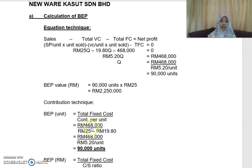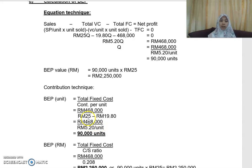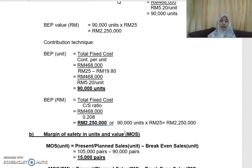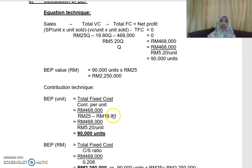Total fixed cost RM468,000 divided by contribution per unit (RM25 minus RM19.80) equals RM5.20, giving the same answer of 90,000 units. To express in value (RM), divide by the C/S ratio of 0.208, which gives RM2.25 million — the same answer. Both the equation technique and contribution technique arrive at the same result.